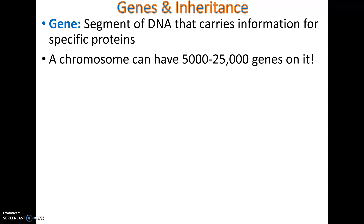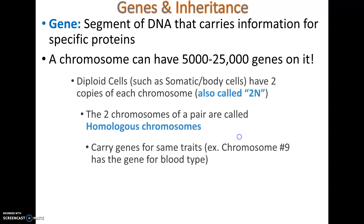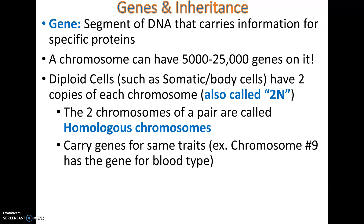A chromosome codes for your blood type, yes, but it also codes for five thousand other things besides that. This is why having an extra or missing chromosome is so detrimental — if you're missing twenty-five thousand proteins that you normally need, or making twenty-five thousand extra proteins, that's going to be a very significant problem.